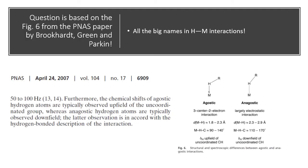The question came up because I used the classic paper by Brookhart, Greene, and Parkin. All of them are well-established scientists and they have credentials to talk about C–H–M interactions. In that paper, they have very clearly mentioned in two different places — once in the text and once in a figure — that you can distinguish between agostic and anagostic interactions based on a few criteria.